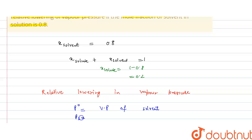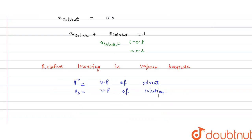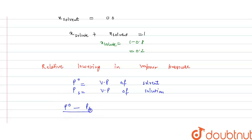If P0 is the vapor pressure of the pure solvent and Ps is the vapor pressure of the solution, then the relative lowering in vapor pressure is: (P0 − Ps) / P0, and this is equal to the mole fraction of the solute.